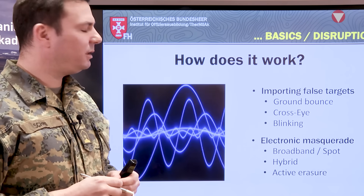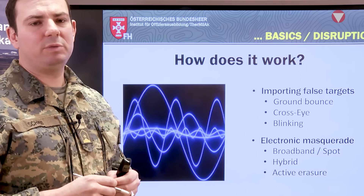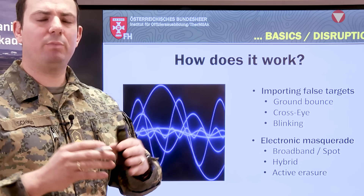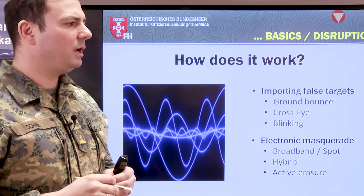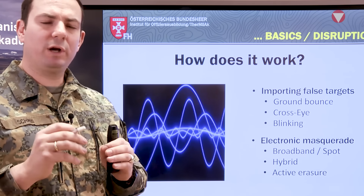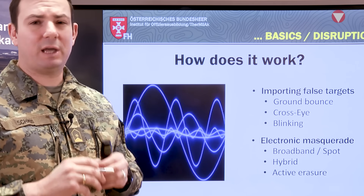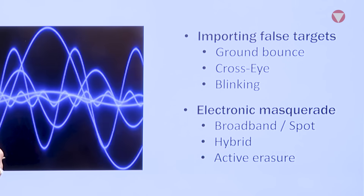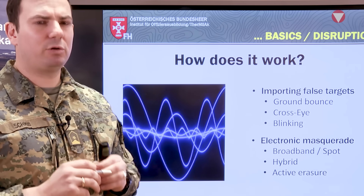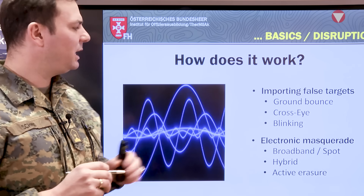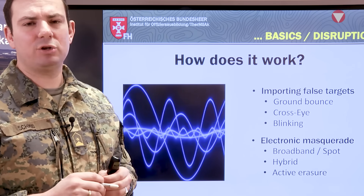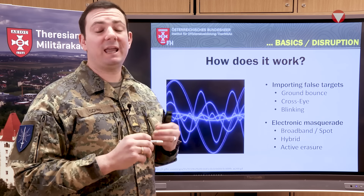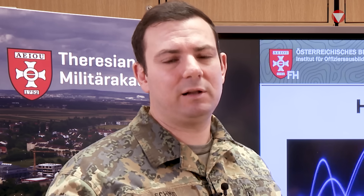For electronic masquerade, there is broadband or barrage jamming — a very broad and loud spectrum — as well as spot jamming, where one specific frequency is jammed directly. The second type is hybrid jamming, a good mixture of both but very energy consuming. The last is active erasure or active cancellation, where you send a signal 180 degrees out of phase in order to cancel that wave.